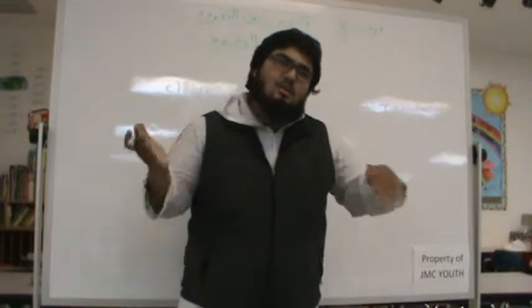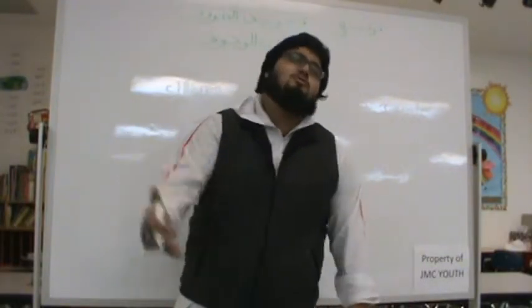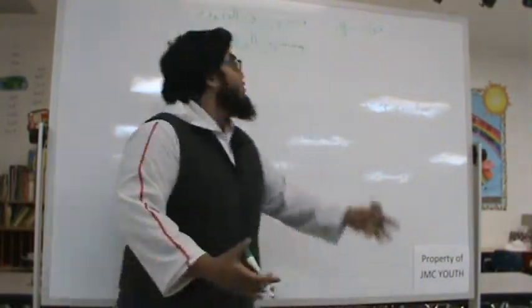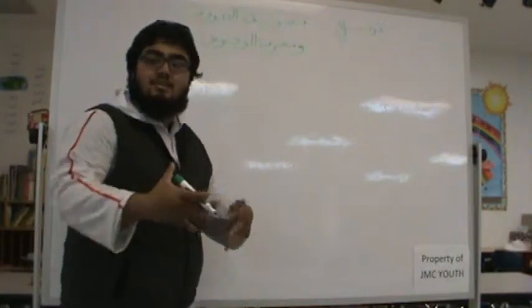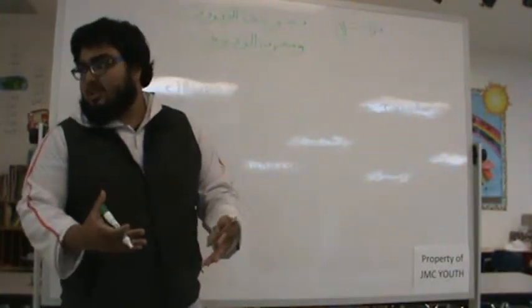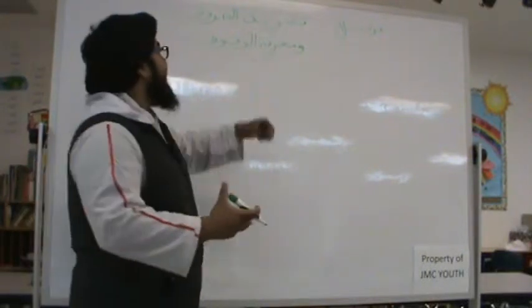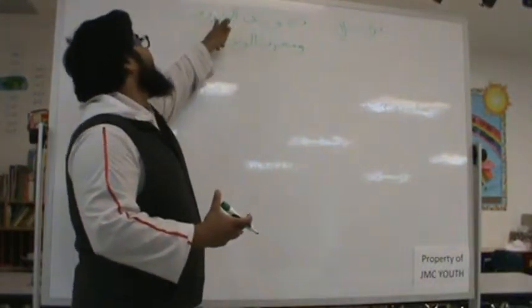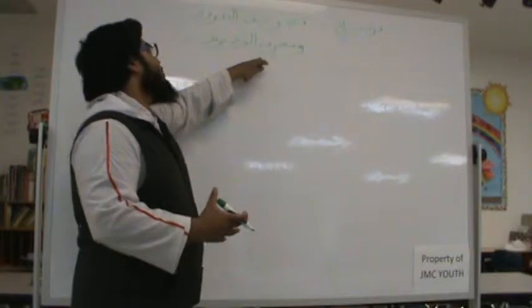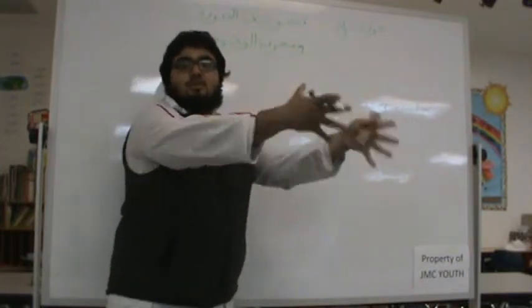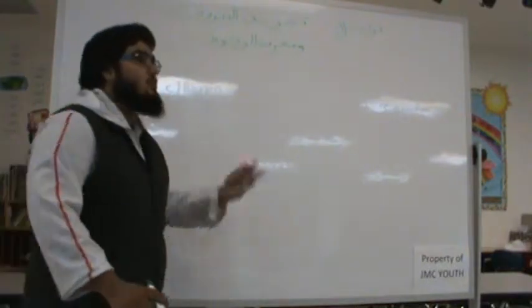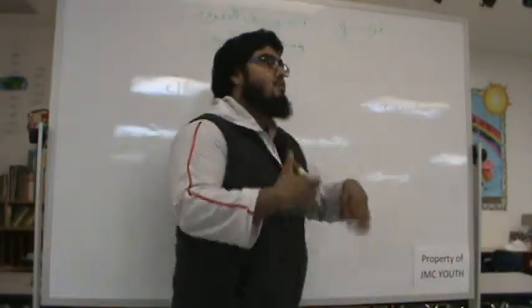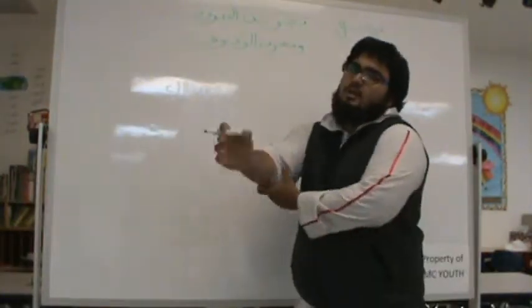Allah says in the Quran, wa rattil al-Quran tartila. Recite in a beautiful manner. And what is a beautiful manner? Tajweed al-huruf. To perfect. Jawwada yujawwidu al-tajweed. To make it best. It comes with the word jayyidun, to be very good. So in that case, to make it very good. What? The letters. And then after that, wa ma'rifatul wuquf. To recognize your periods and your stops. And in that, the tajweed comes. That's where the tajweed comes. And that's where we understand the different laws of the tajweed. We will go over that inshallah afterwards.